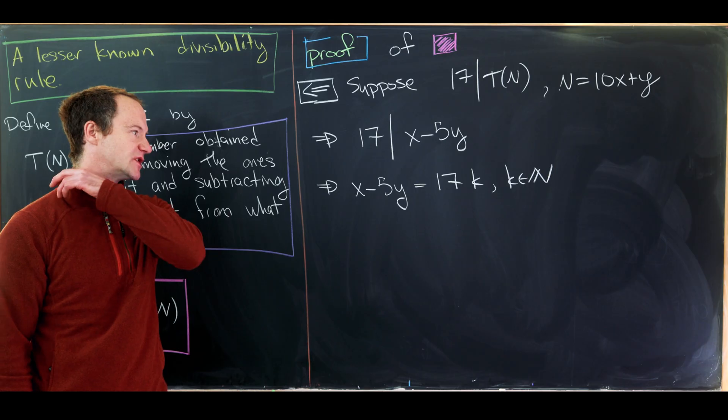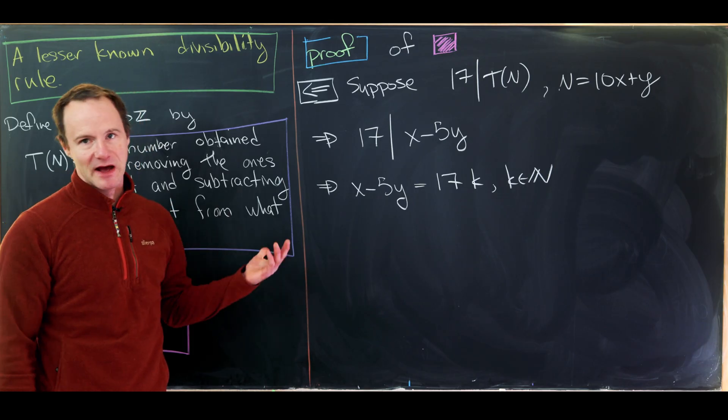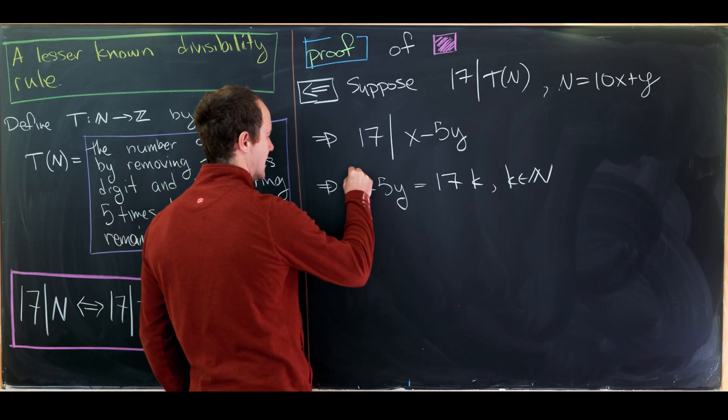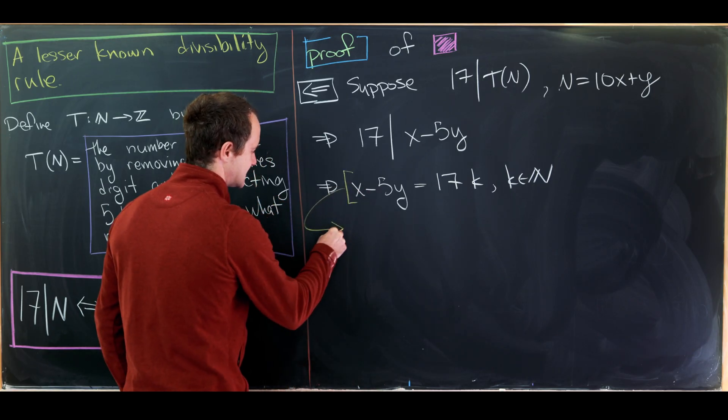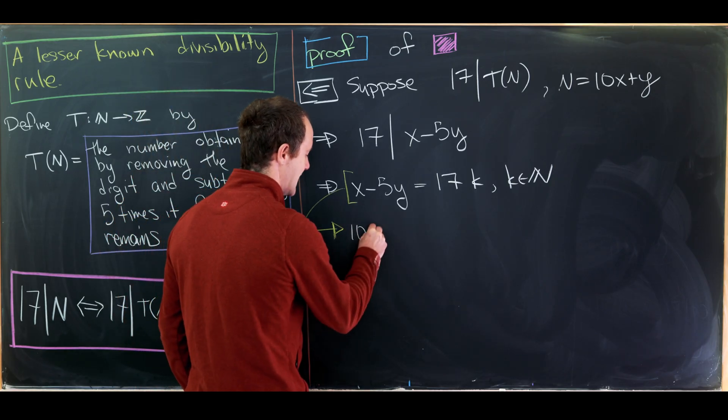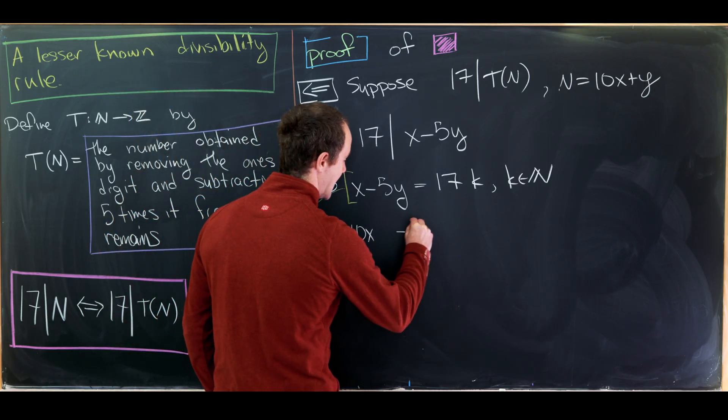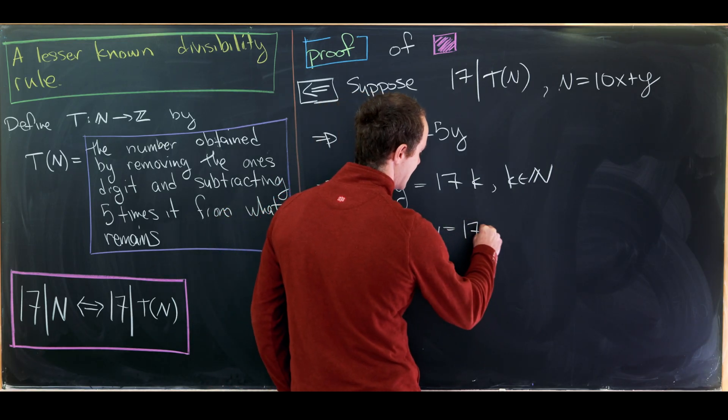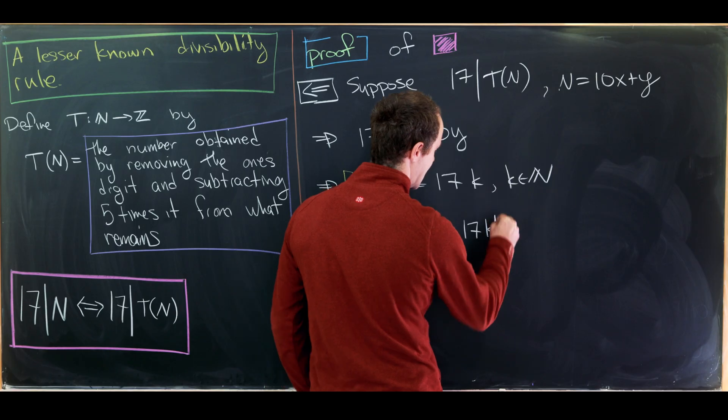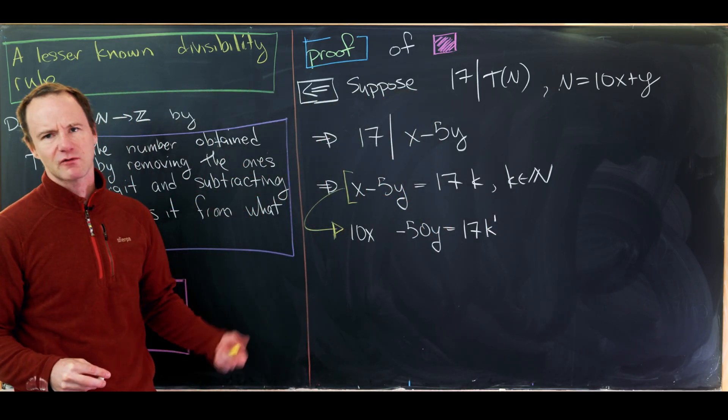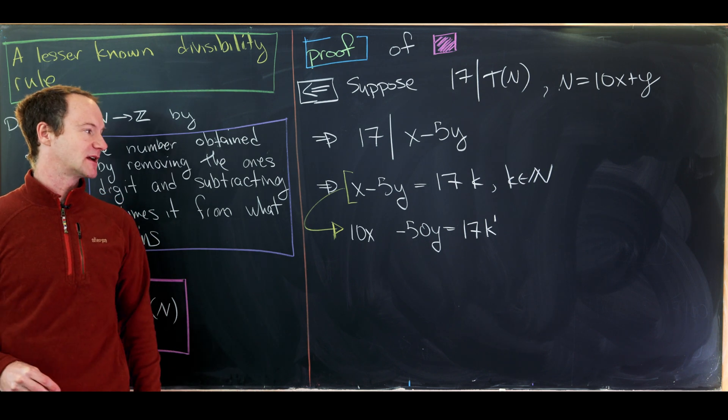Now I'll take motivation from the fact that last time I had to multiply by 10. And that's exactly what we'll do here as well. Let's take this and multiply it by 10. So that's going to give us 10x and then minus 50y is equal to 17 times k prime, where that k prime is simply 10 times k. But I think writing it like this makes it a little bit cleaner.